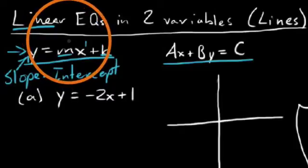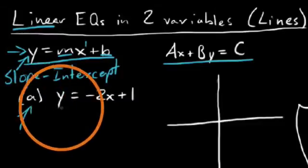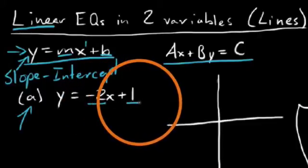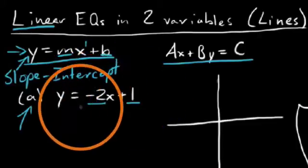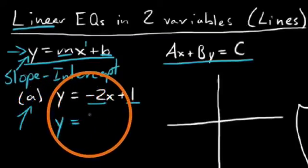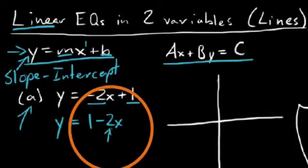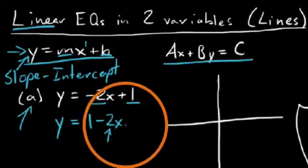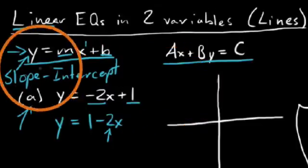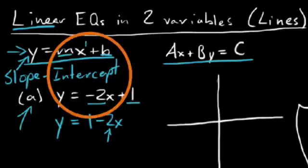Another thing to point out: the slope is m. Looking at this first example equation, you'll notice it's in slope-intercept form. It's pretty straightforward to see that negative 2 is our slope and 1 is our y-intercept. It would have been perfectly okay to write this as y equals 1 minus 2x, but you still have to know that negative 2 is the slope, and we determine this because it's the coefficient of the variable x. This slope-intercept form, y equals mx plus b, is one you want to have memorized.